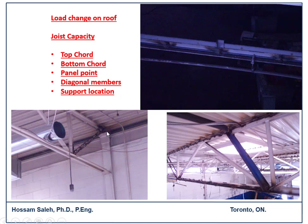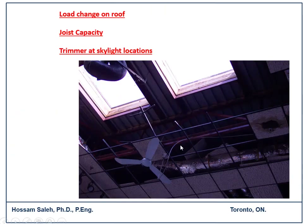At the skylight location, you need to provide a trimmer around the opening — similar to what we discussed for timber. Based on the skylight weight, you may or may not need to add support to the existing joist. This depends on the size of the glass, its weight, and several other parameters.